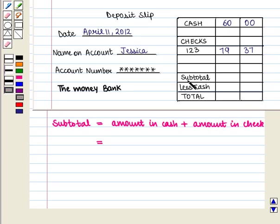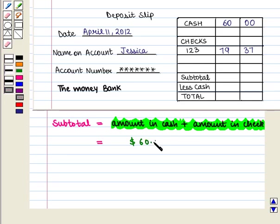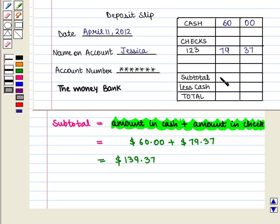Then we write the subtotal, which is given by the amount in cash plus the amount in cheque. This is equal to $60 plus $79.37, which equals $139.37. So we write 139.37 on this slip.